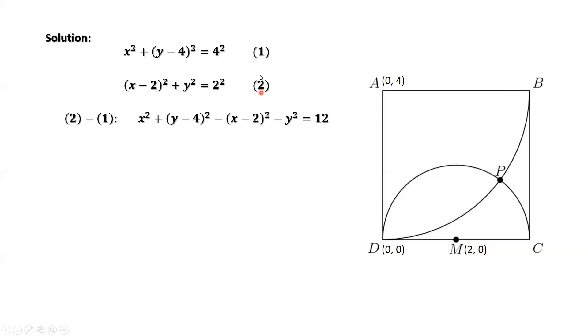Second equation minus the first equation. We simplify the left-hand side. Solve this equation for x in terms of y. This implies x equals 2y.